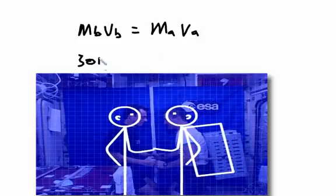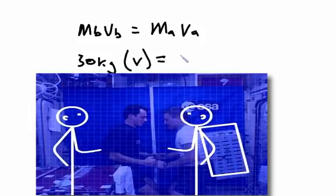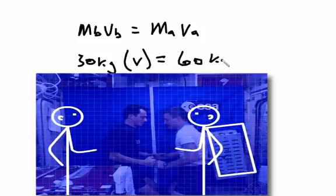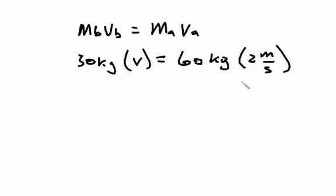He pushes away at two meters per second. How fast must the other one move away if momentum is conserved? So we set this up with the formula: MV before equals MV after.